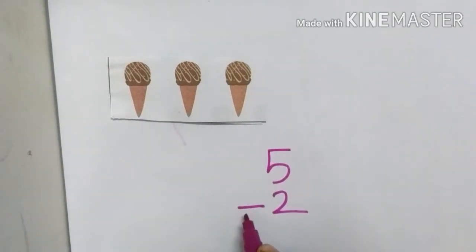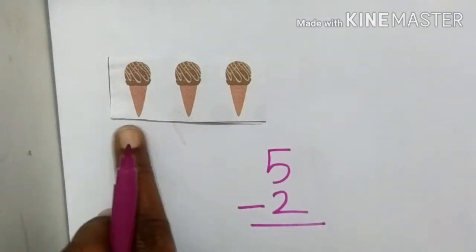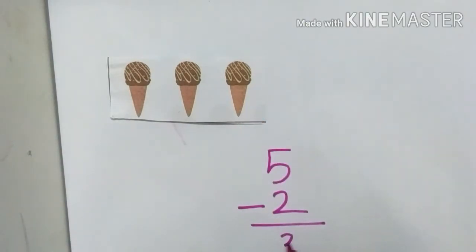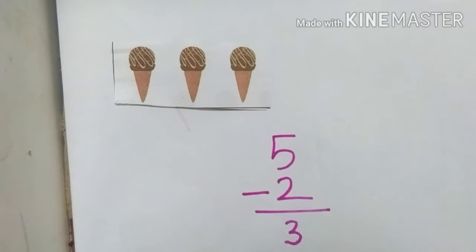This is the symbol of subtraction. So how many are there? 1, 2, 3. Left 3 ice cream.